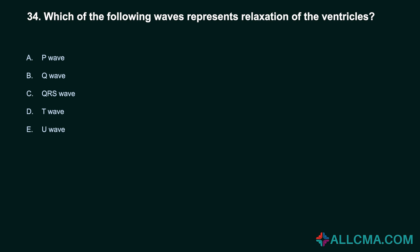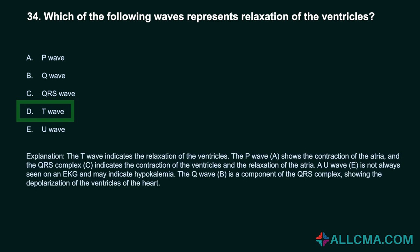Question 34: Which of the following waves represents relaxation of the ventricles? A. P wave. B. Q wave. C. QRS wave. D. T wave. E. U wave. Correct answer: D. T wave. The T wave indicates the relaxation of the ventricles. The P wave shows the contraction of the atria. The QRS complex indicates the contraction of the ventricles and the relaxation of the atria. A U wave is not always seen on an EKG and may indicate hypokalemia. The Q wave is a component of the QRS complex, showing the depolarization of the ventricles of the heart.